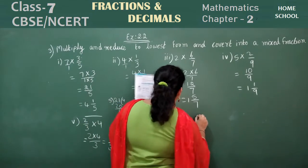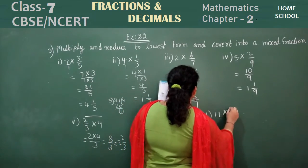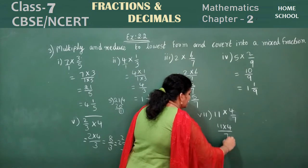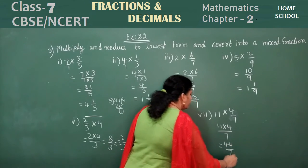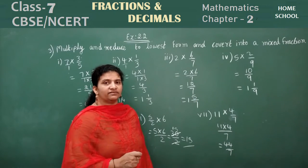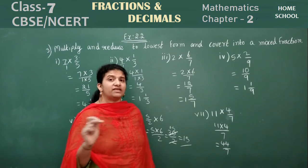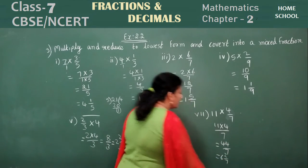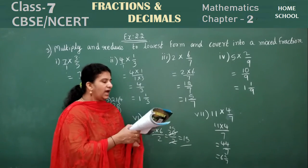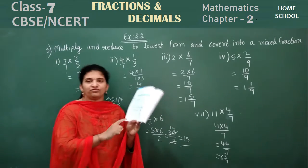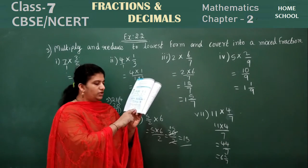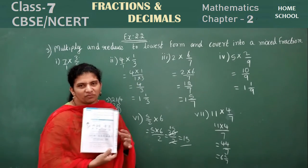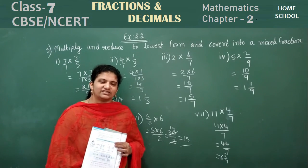Seventh problem: 11 into 4 by 7. Multiply: 11 into 4 is 44, so 44 by 7. The nearest multiple of 7 is 7 sixes are 42. Write 6 in the integer part. 44 minus 42 is 2, so the remainder is 2. Mixed fraction: 6 and 2 by 7. There are still three more problems — try them and do those as homework.